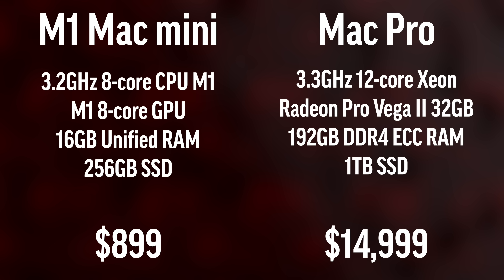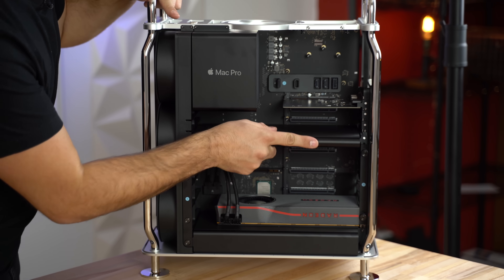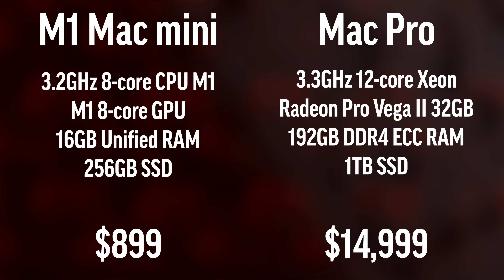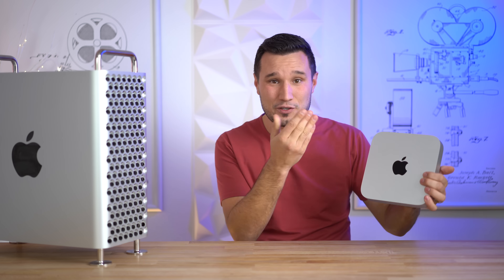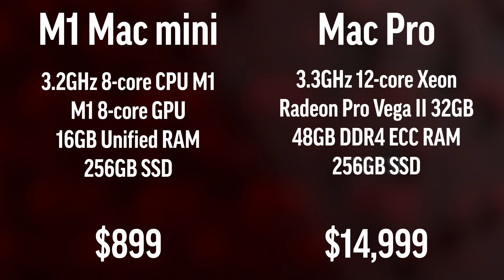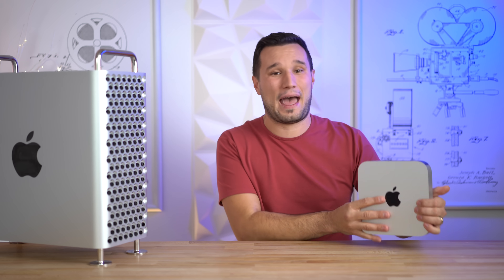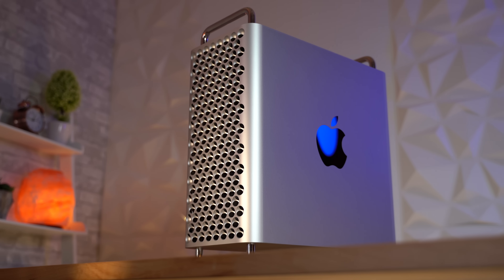There's a massive price difference between these two machines and a pretty big spec difference as well. My Mac Mini is under a grand compared to $15,000 for the Mac Pro. If we get rid of the Afterburner, bump down the RAM to 48 gigs — comparable to 16 gigs of unified RAM — and drop the SSD storage, the Mac Pro is still coming in at around $10,000, about ten times that of the Mac Mini.